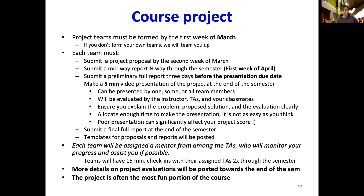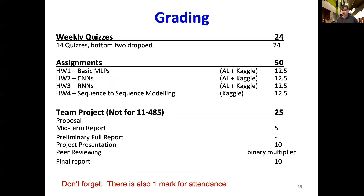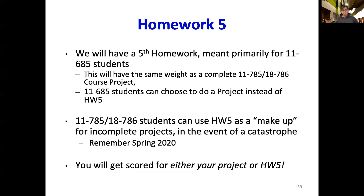This is a summary of how the points for your final grade are distributed across all the quizzes, assignments, and project deliverables. Note that the total adds up to only 99, but don't forget that there is also one mark for attendance. There is a fifth homework meant primarily for students in 11-685, which has the same weight as a complete 11-785 or 18-786 course project. Students enrolled in 11-685 can choose to do either a project or homework 5. Take note that you will get scored either for your project or for homework 5, and not for both.